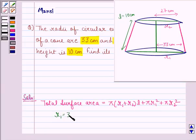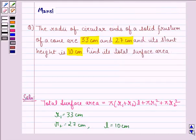Here r₁ is equal to 33 cm, r₂ is equal to 27 cm and L is equal to 10 cm. So, we simply have to put in the values now.